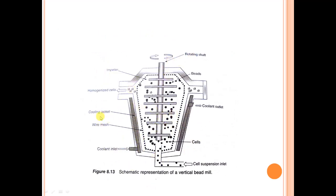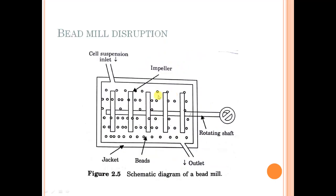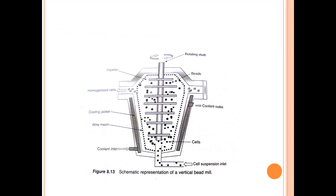Similarly, we can have vertical systems. This is a typical example of a vertical ball mill or bead mill system. In this case, the homogenized cell comes out at the top and the cell suspension enters from below. The impeller blades and other components remain the same, but the construction is vertical. A vertical system may require more energy because the cell comes from below and must be mixed upward, so energy requirement is much higher compared to the horizontal system. The cooling jacket, beads, rotating shaft, and impeller blades are all the same as in the horizontal design.